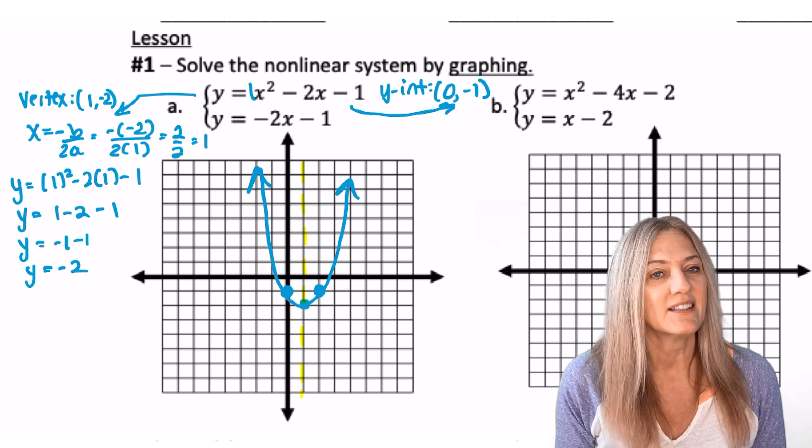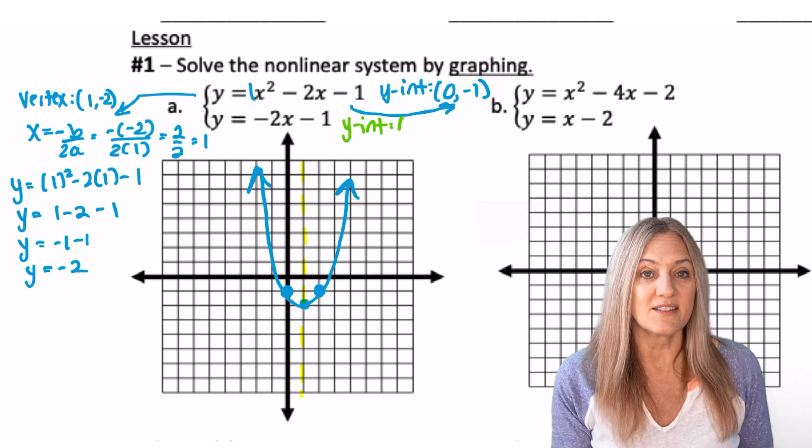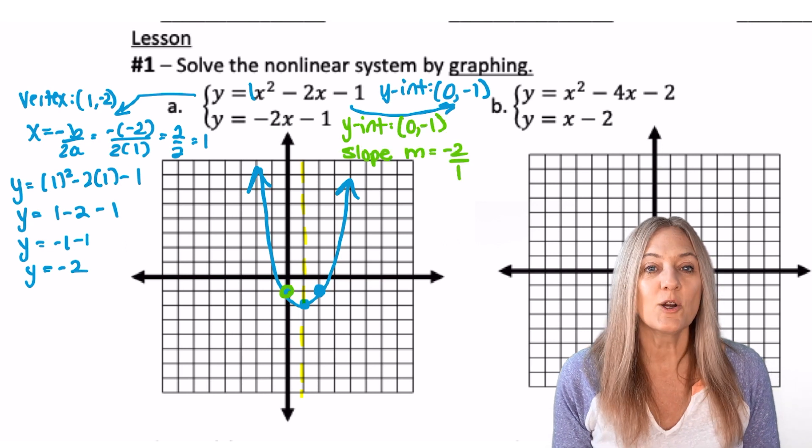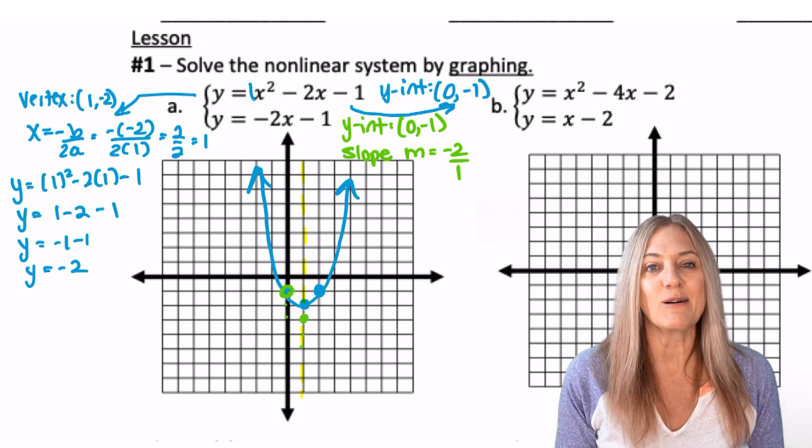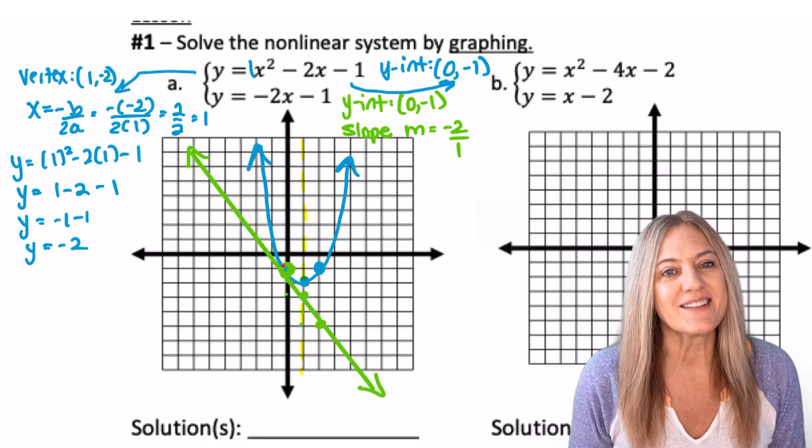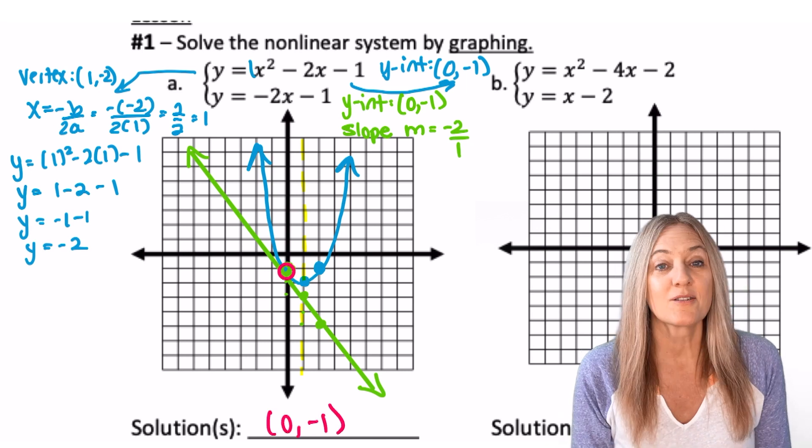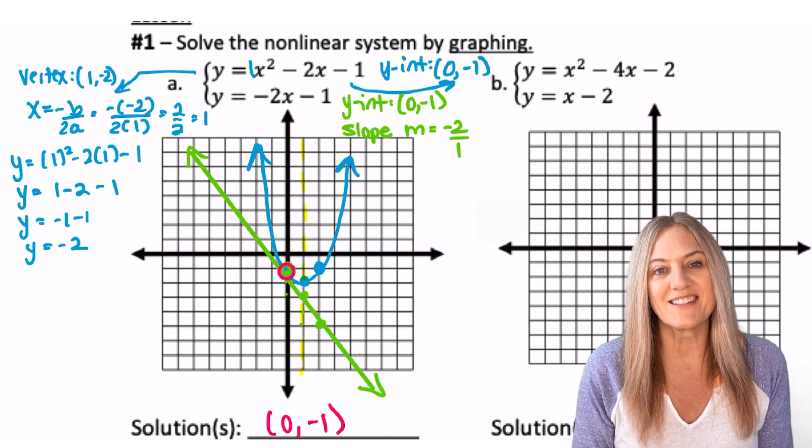Now let's graph the line. We see that the y-intercept there is also negative 1. 0, negative 1. Slope is negative 2, so from the y-intercept I'll go down 2 and then to the right 1. It appears the only place that they intersect is at the y-intercepts, which we knew they shared. So one real solution. 0, negative 1.